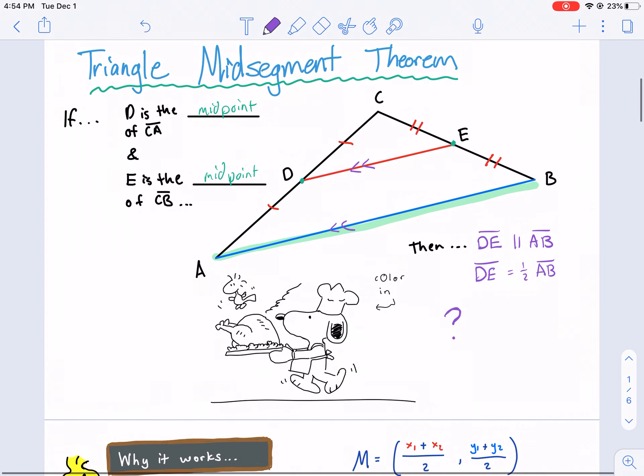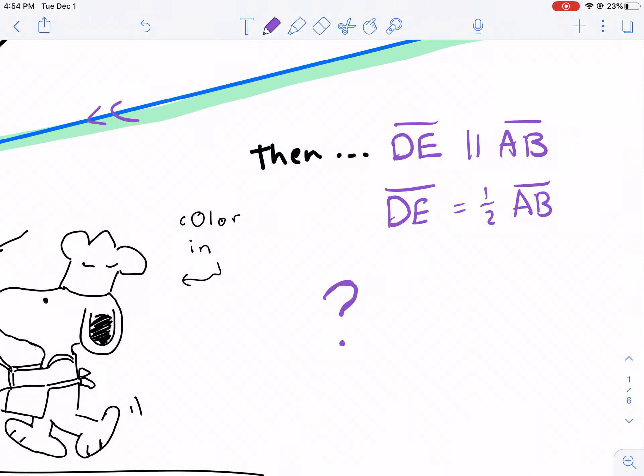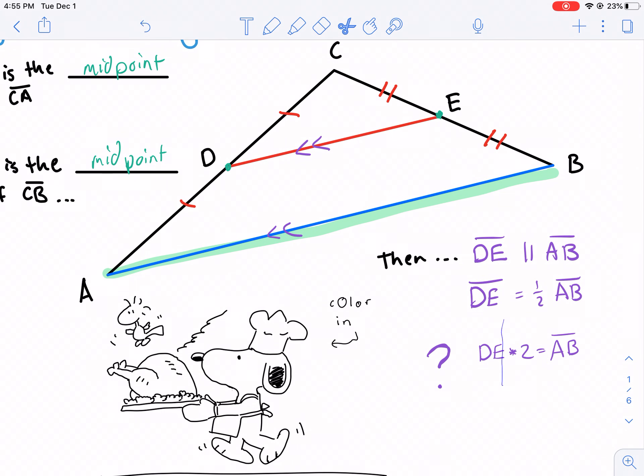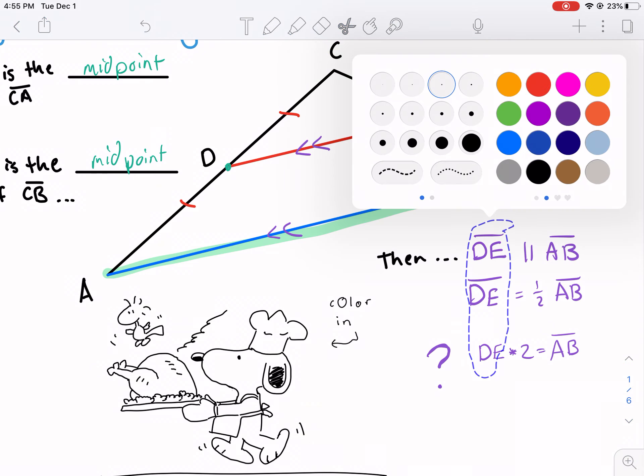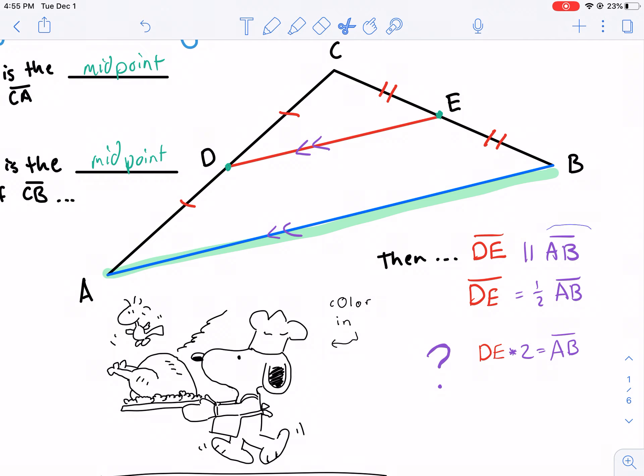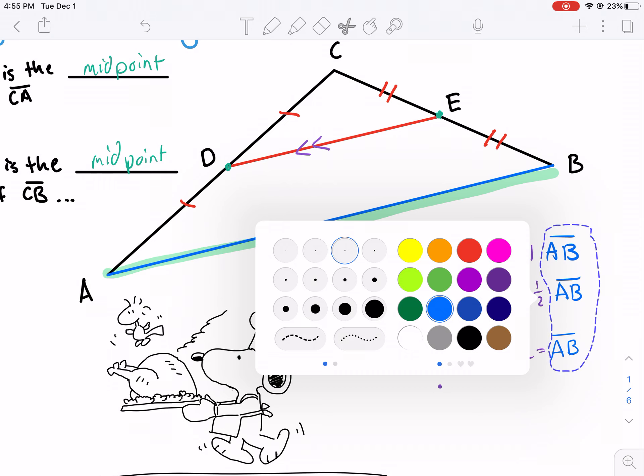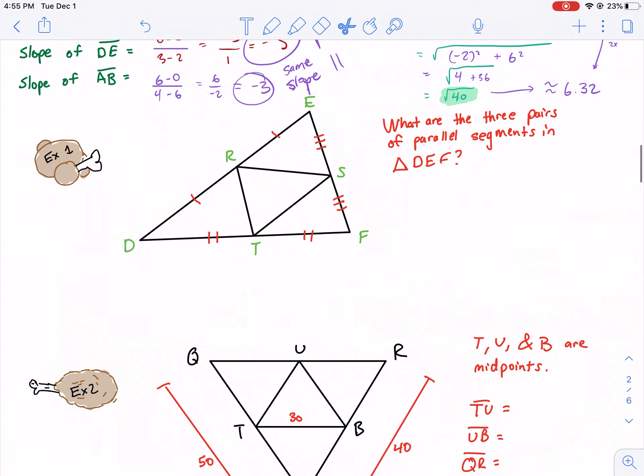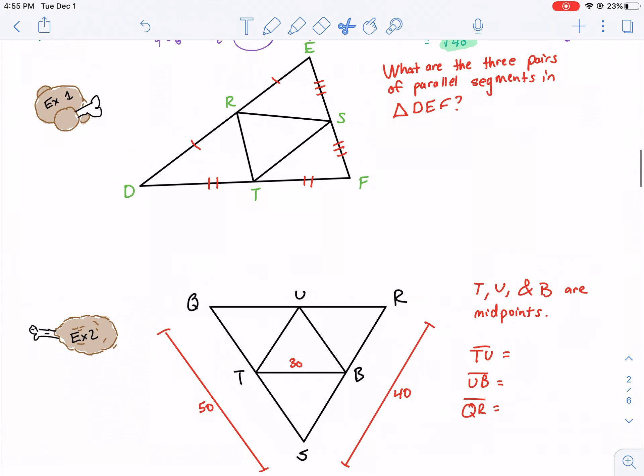So now we understand why this theorem works, why it's important. Another way to express this, by the way, is DE times 2 equals AB. That's another way to think of it. So this is kind of the theorem that's going to guide you through this section. Hopefully you found this helpful. Stay tuned for the part 2 of this video where we're going to dive into the examples.